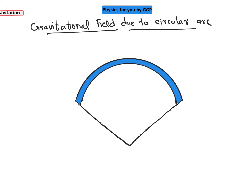Now we will discuss the gravitational field due to a circular arc. Consider a circular arc of mass m and radius r. We need to find the value of gravitational field at its center.